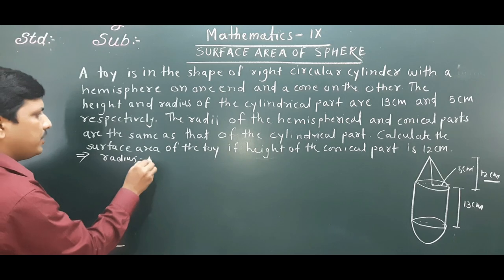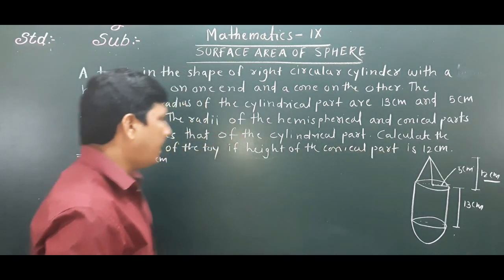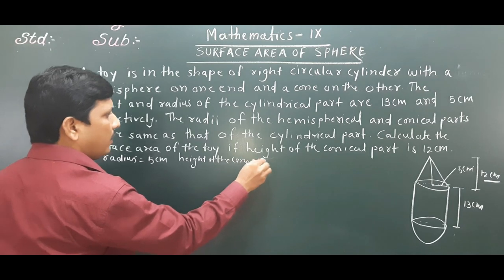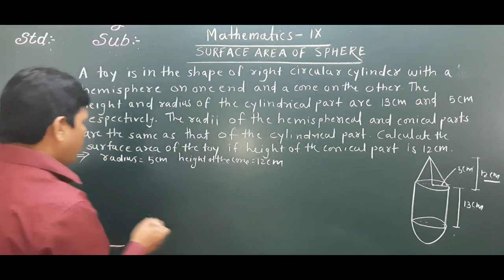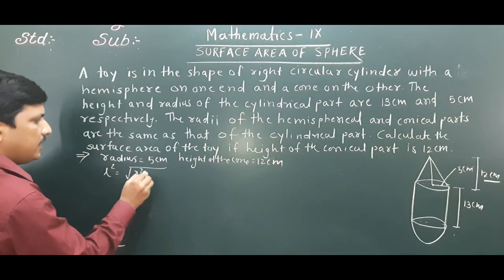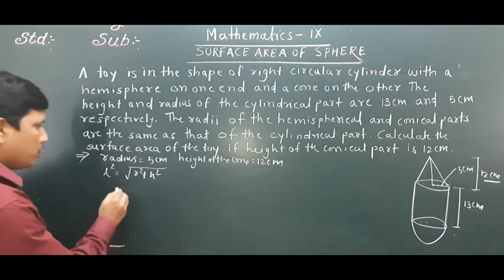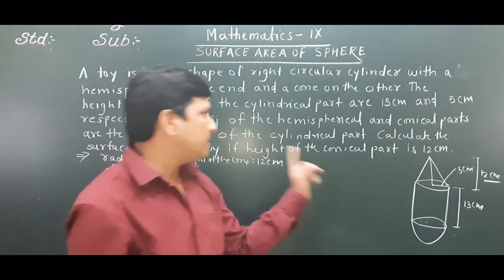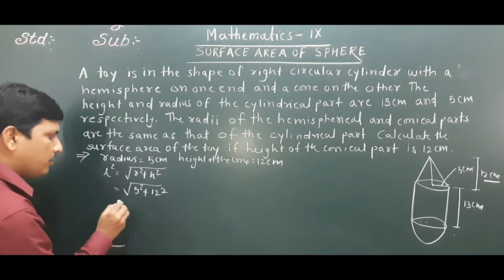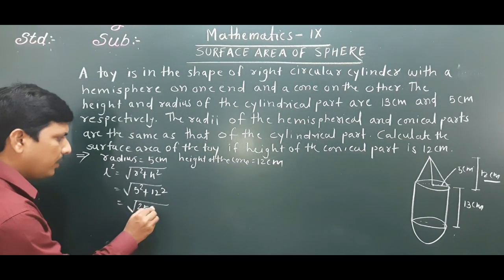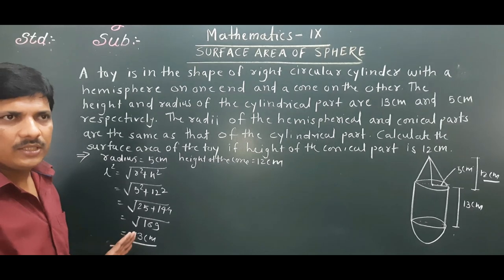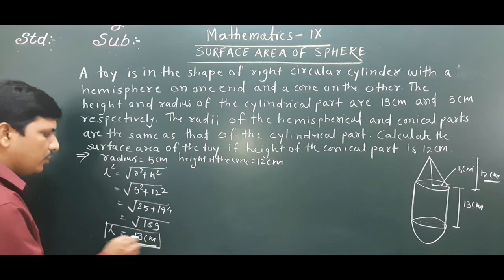Slant height L = √(r² + h²) = √(5² + 12²) = √(25 + 144) = √169 = 13 cm.